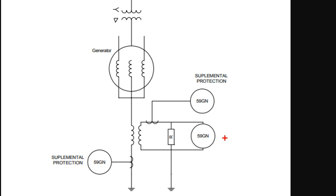Neutral overvoltage 59GN is protected. This is a very important protection. In that condition, you can use the neutral ground. If you have a resistance, you can use the resistance for protection.